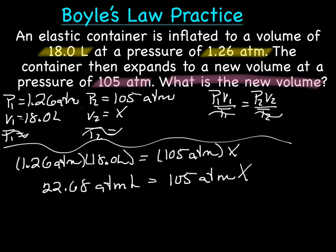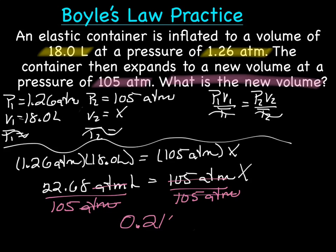Alright, now we need to solve for X, which means get the X by itself. So we will divide both sides by 105 ATM. This allows us to cross out our ATMs. And when I calculated that, I came up with 0.216 liters. If we go back and check sig figs, we have three sig figs and three sig figs and three sig figs, so that's our answer.